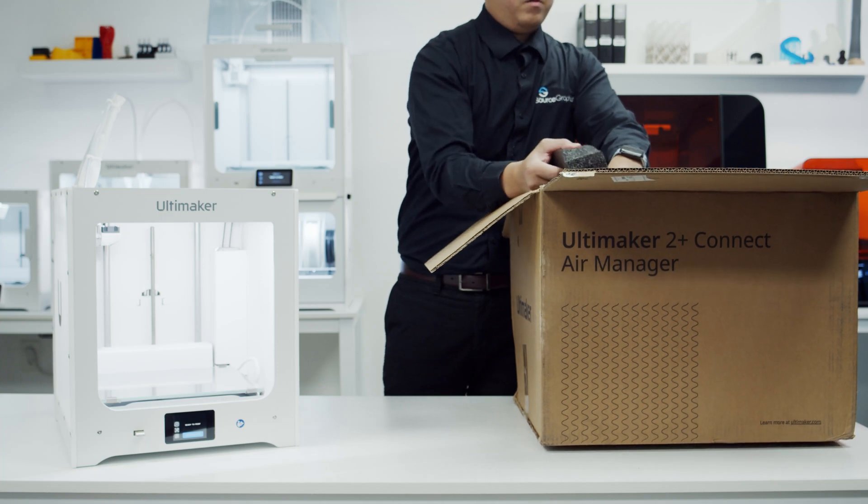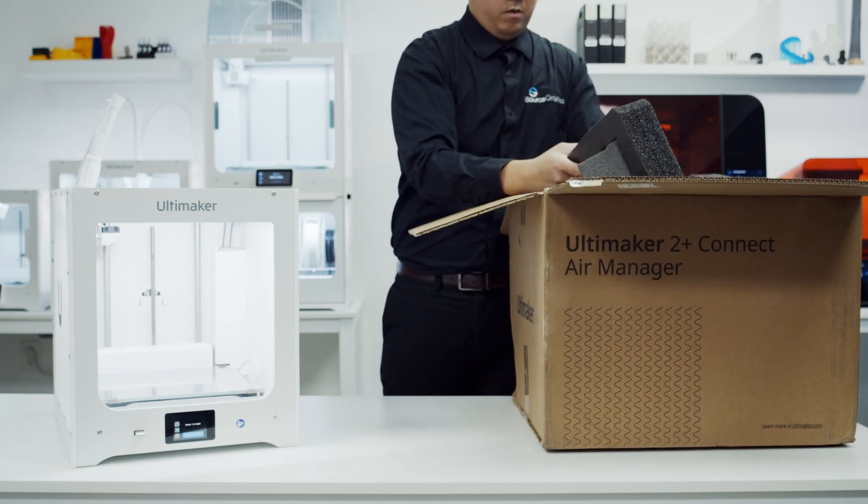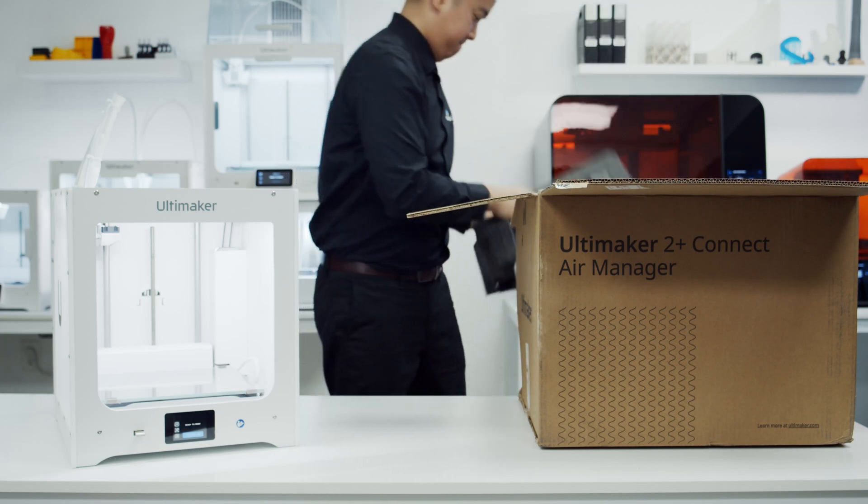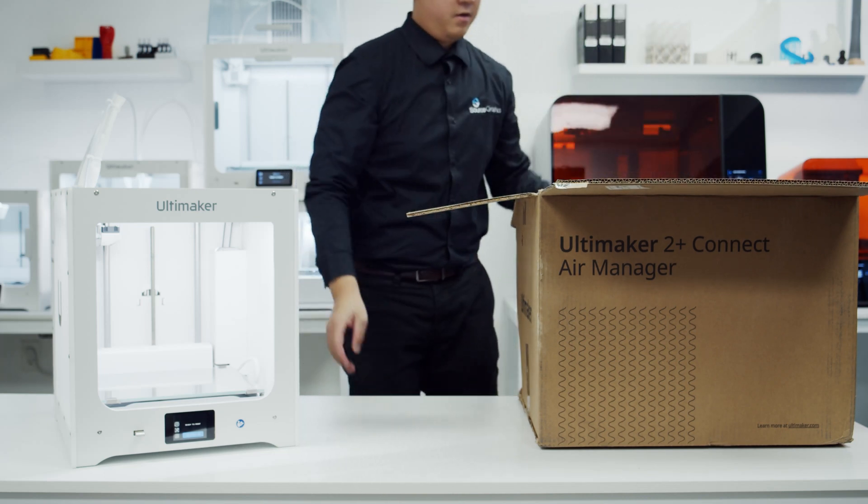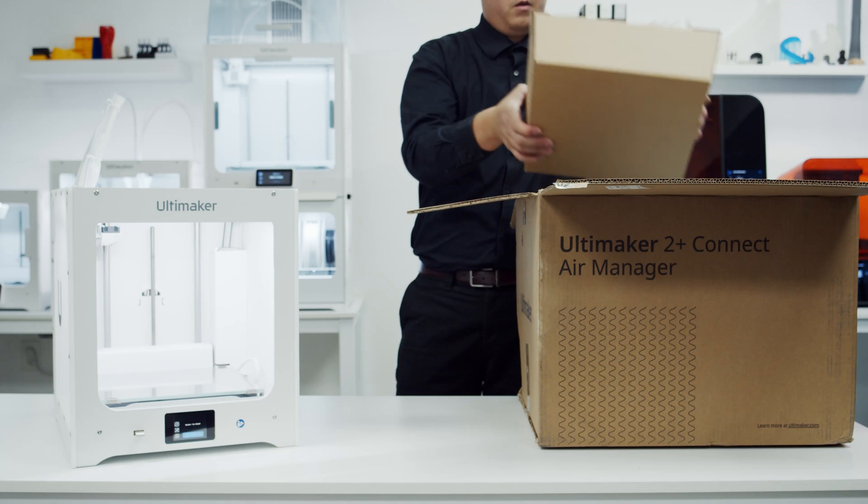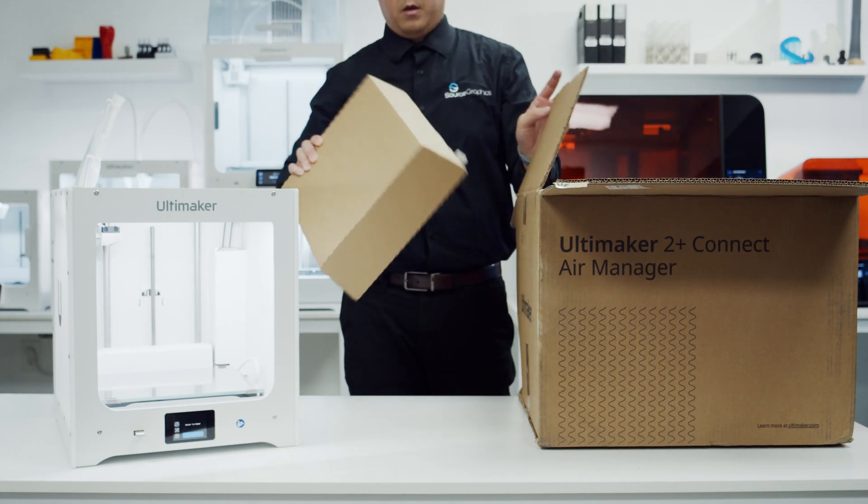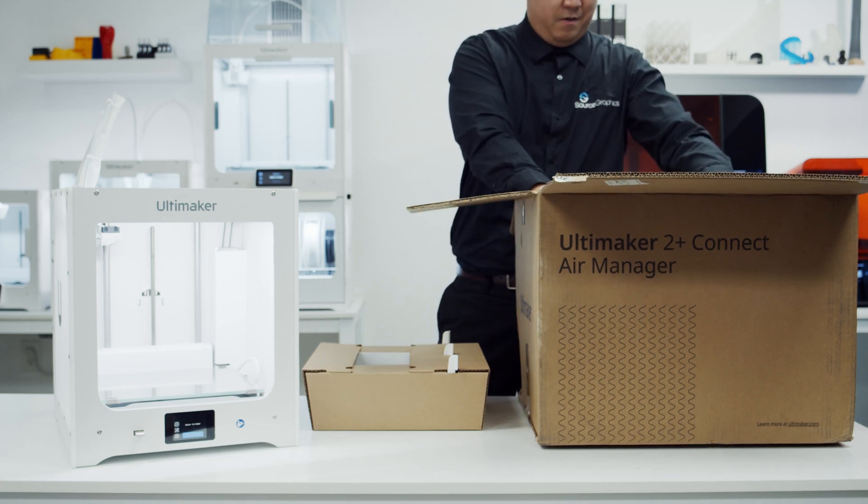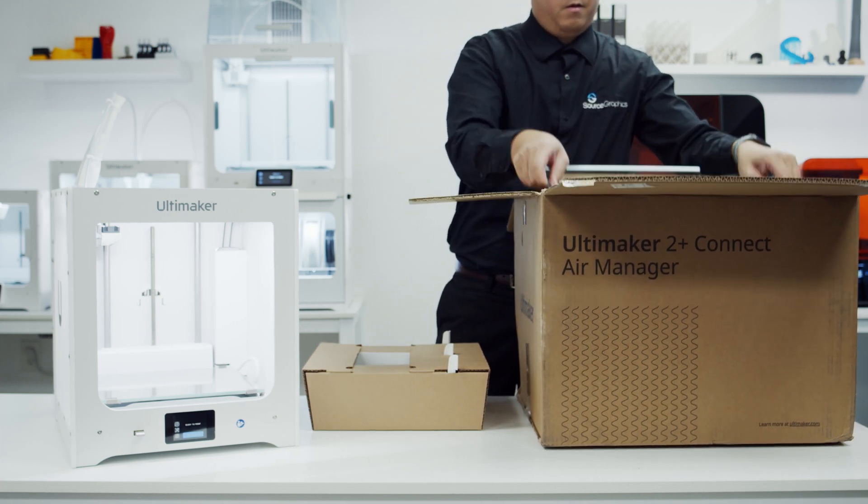With our printer, we got the Air Manager, which encloses the top of the Ultimaker 2 Plus Connect and filters out ultra-fine particles. It also acts as a physical barrier to prevent users from reaching into the machine, and it automatically adjusts its fan speed to optimize print quality based on the material.